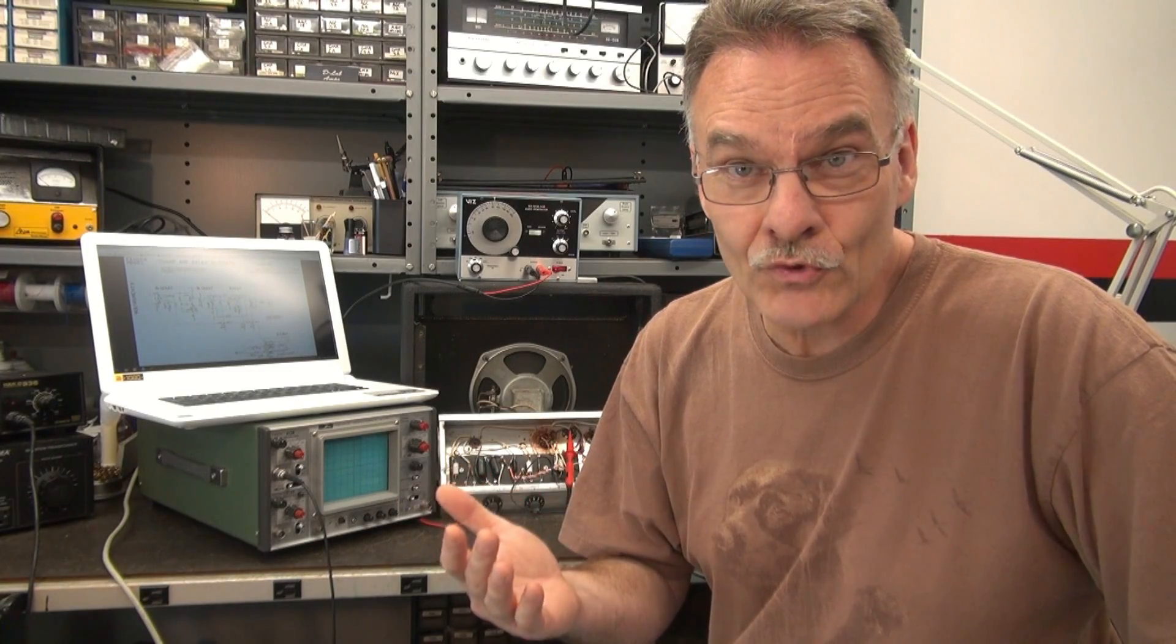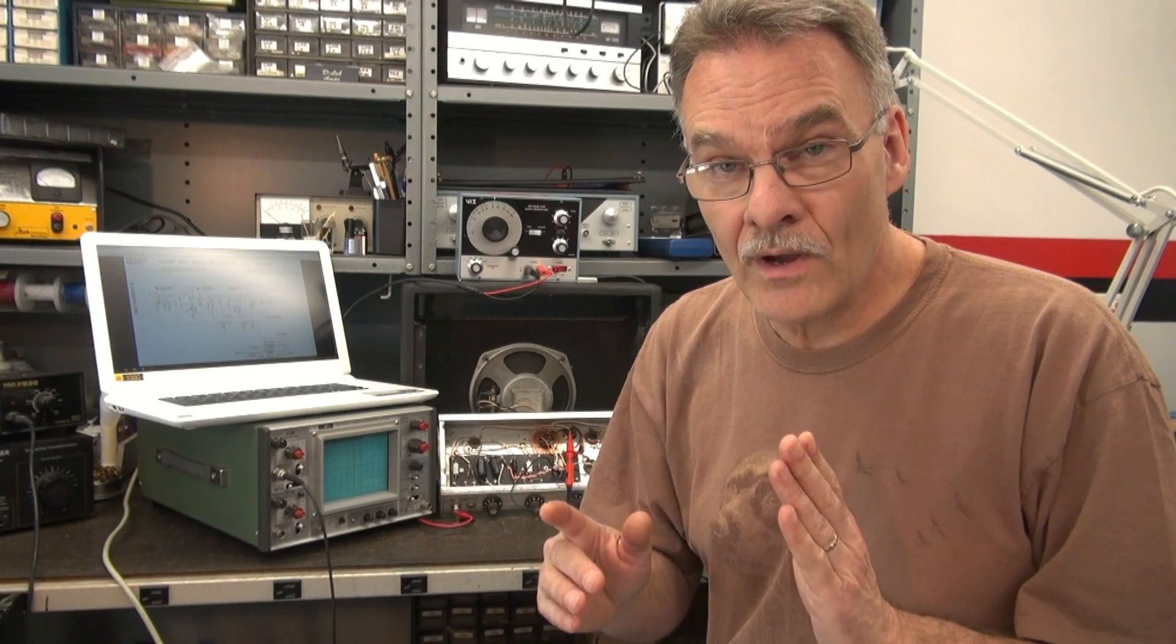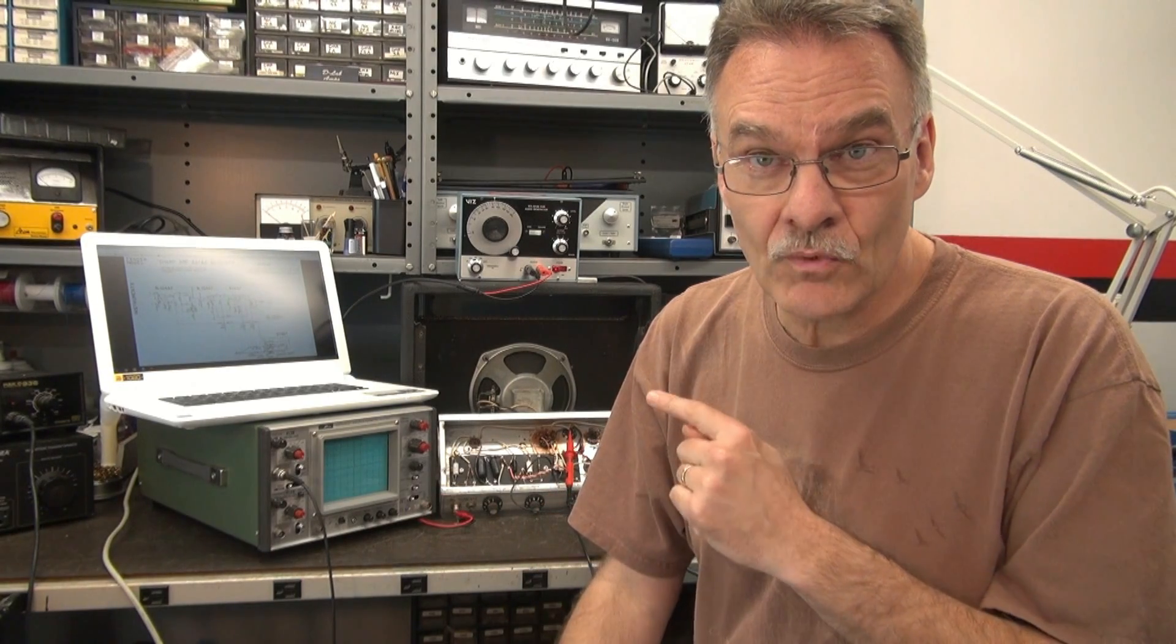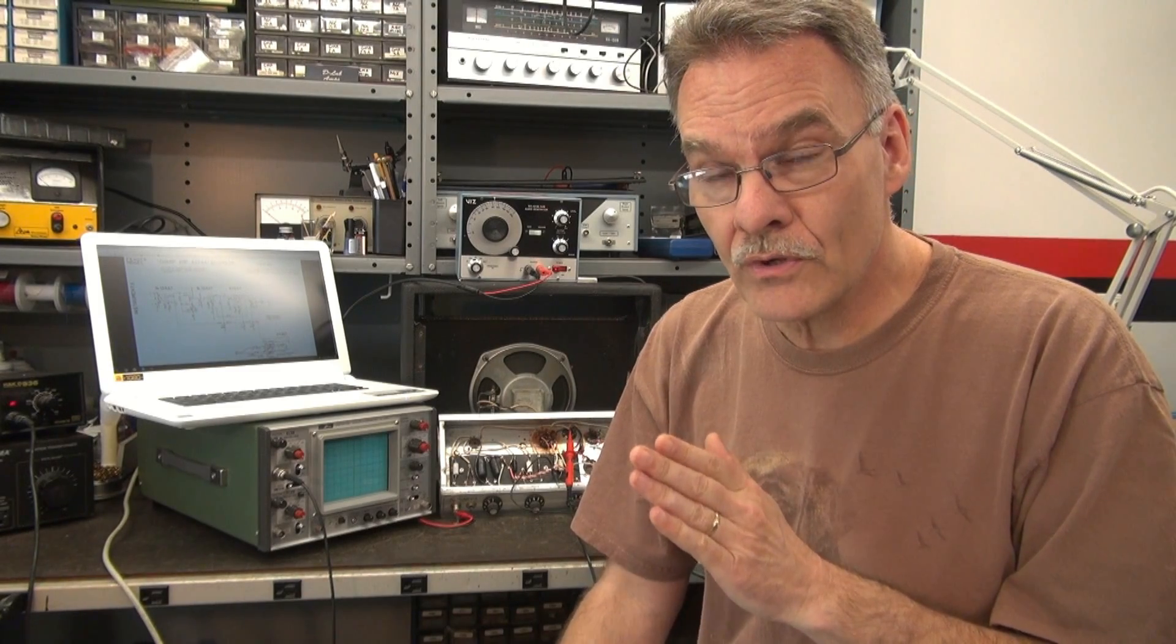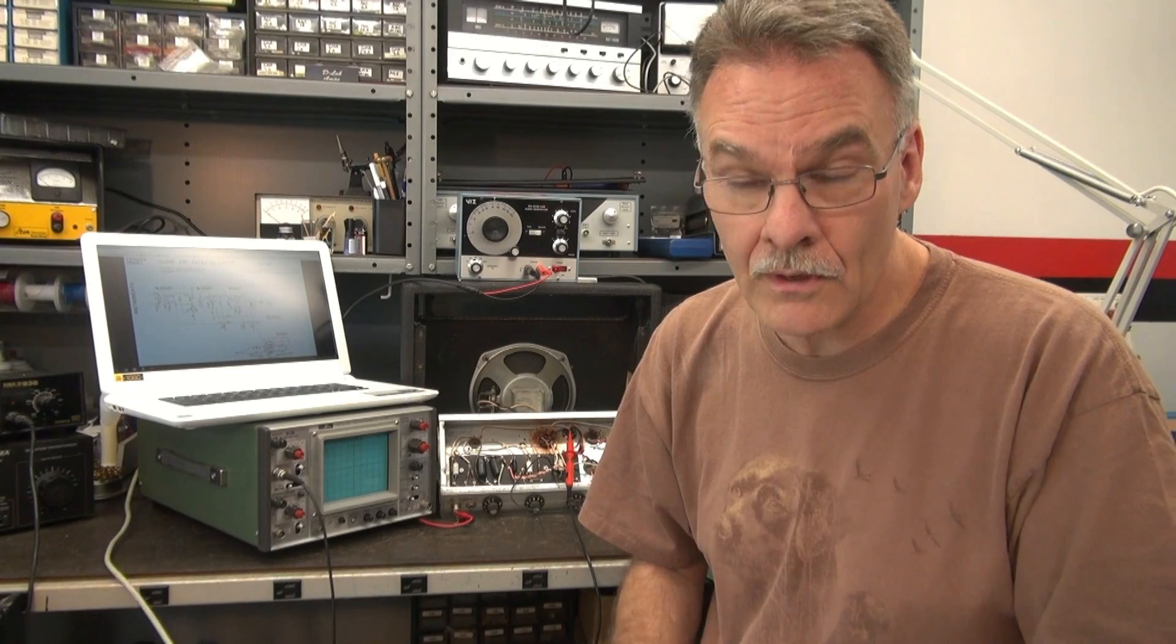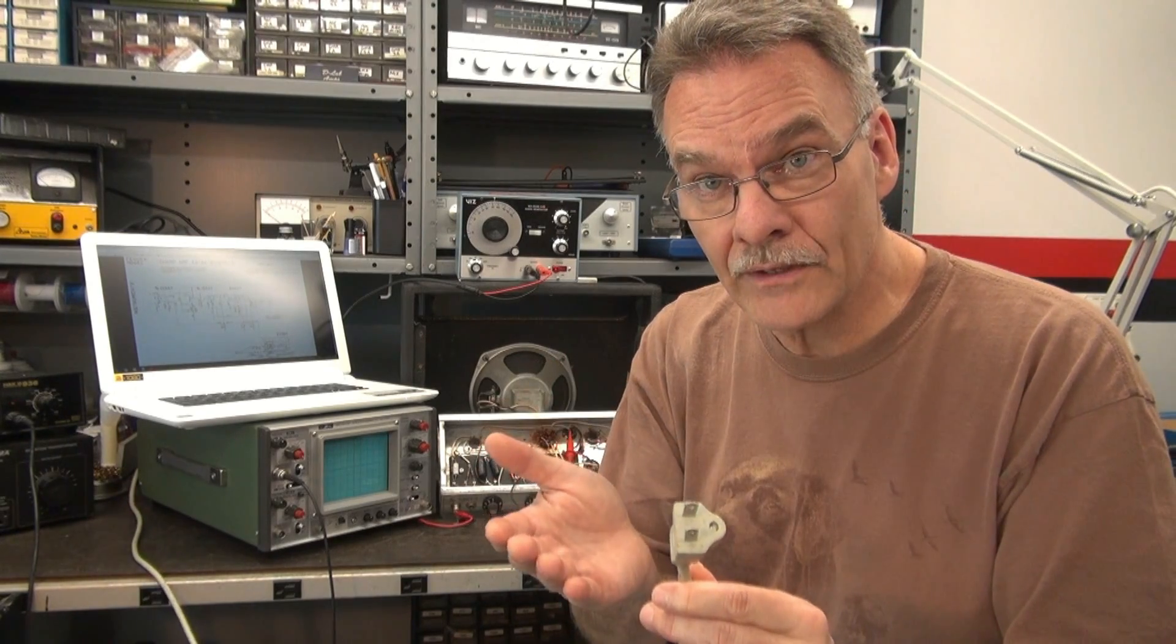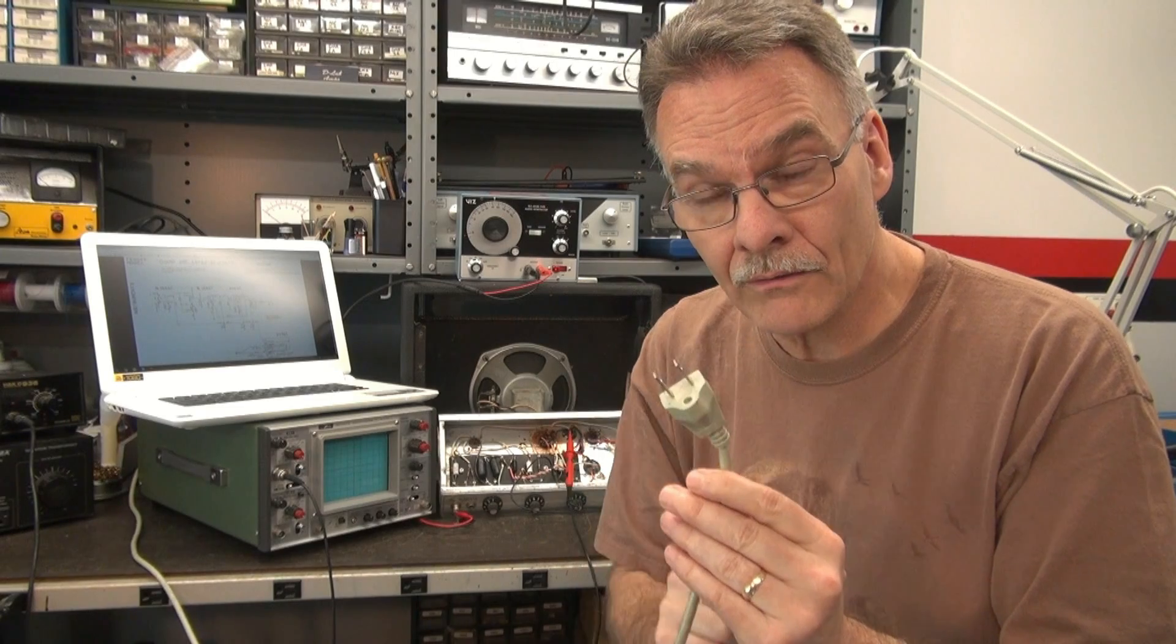So there you have it. A successful signal tracing through a Fender Champ amplifier. Now, one thing I wanted to point out is this one has a grounded power cord on it. So I wasn't really too concerned about my scope grounding things out.